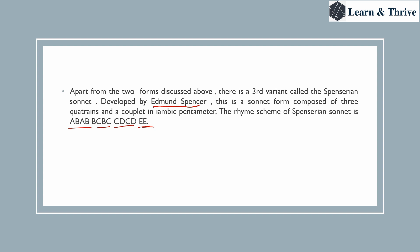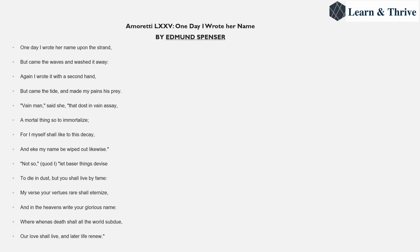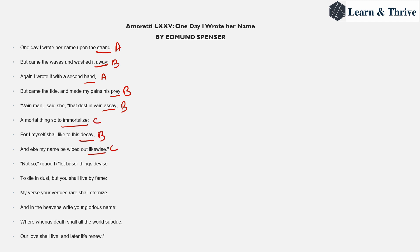Let us look at an example of a Spenserian sonnet: 'One Day I Wrote Her Name,' a very famous sonnet by Edmund Spenser. Looking at the rhyme scheme: 'hand' and 'hand' rhyme — a; 'away' and 'pray' — b; 'sand' — a again; 'immortalize' and 'likewise' — c; 'decay' — b; 'devise' and 'likewise' — c; 'fame' and 'name' — d; 'eternize' — c; 'subdue' and 'renew' — e. This is the rhyme scheme of Spenserian sonnets.